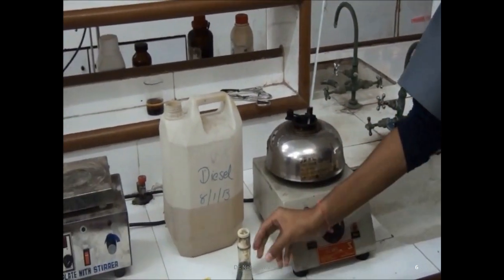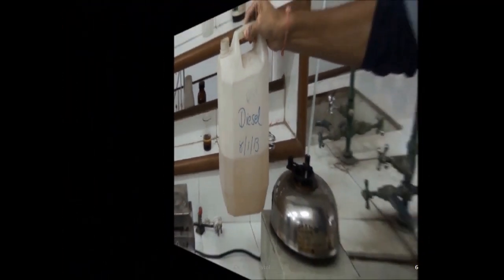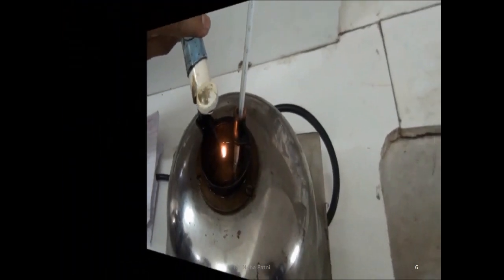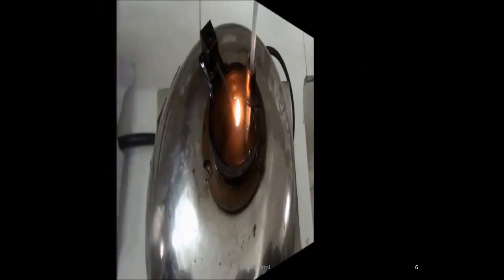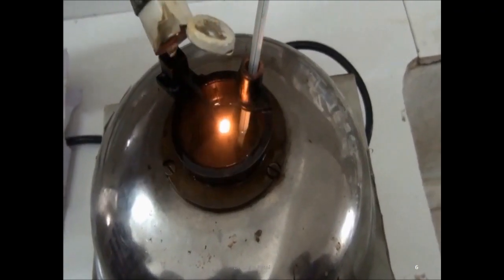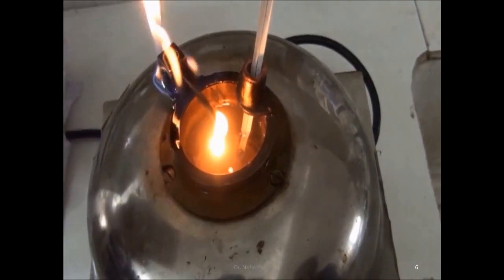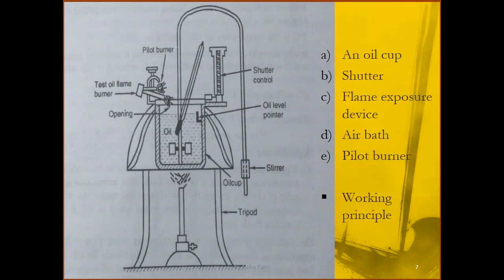For the open cup procedure, first light the test flame and heat the oil at a rate such that the temperature increases by 5 to 6 degrees Celsius per minute, adding kerosene to the test flame as fuel. After a few minutes, observe the flash point and record that temperature. Keep heating beyond the flash point until fire is observed for at least 5 seconds, and record that temperature as the fire point.